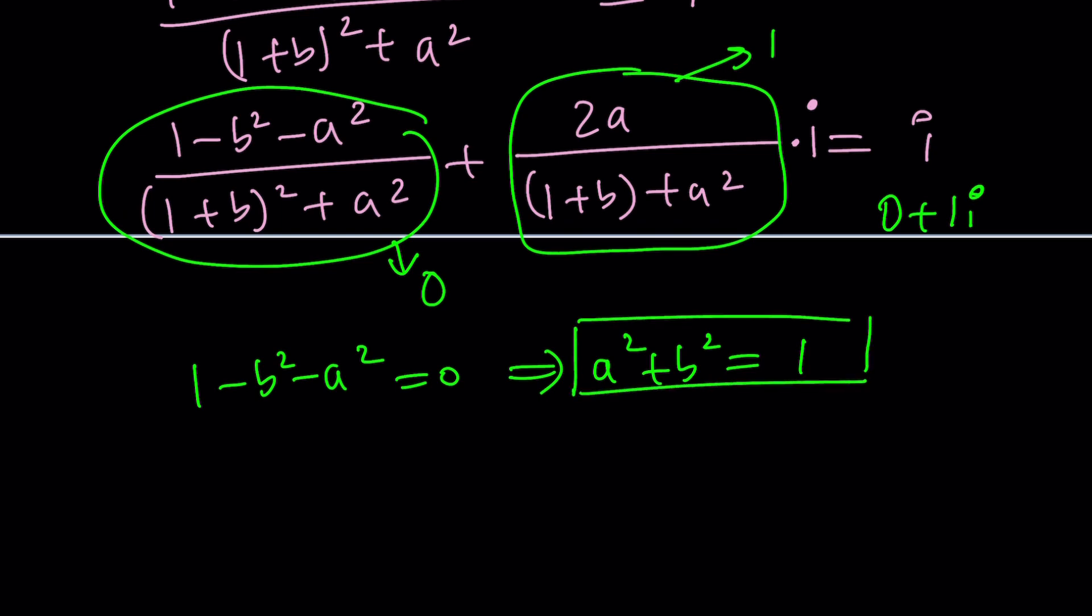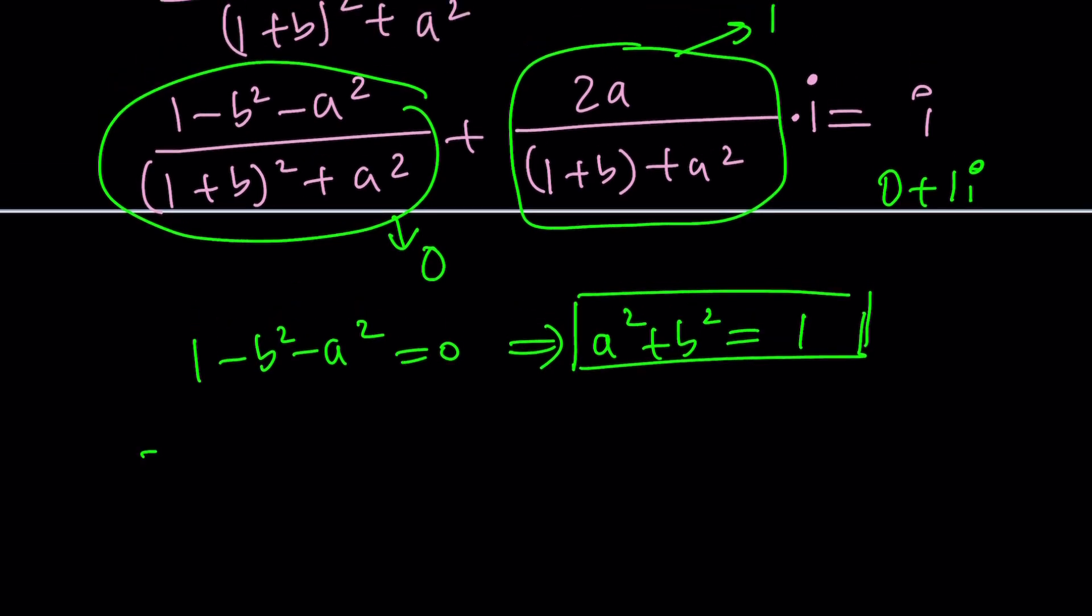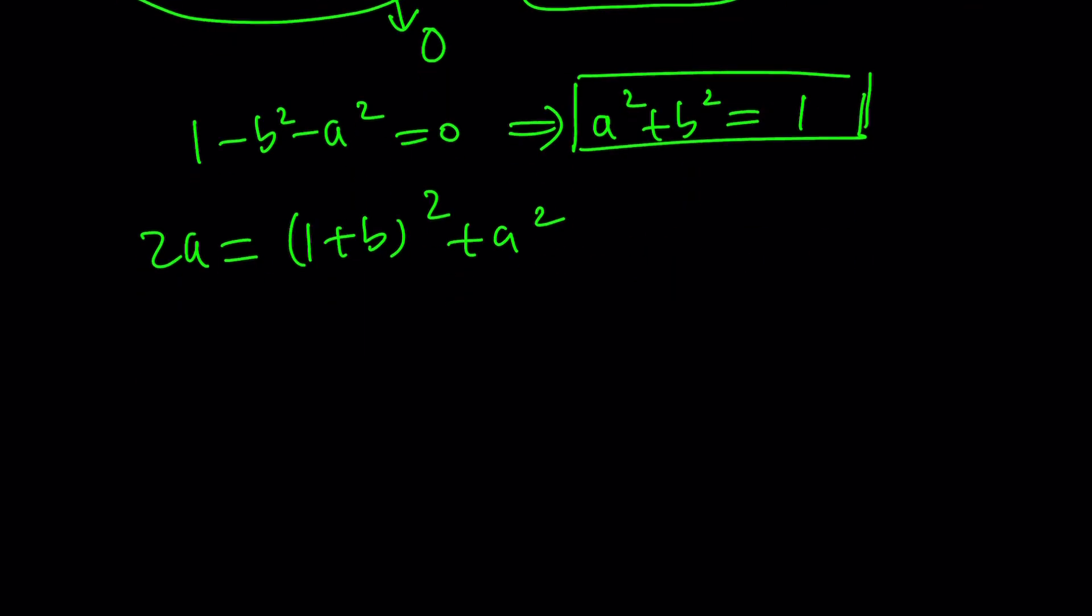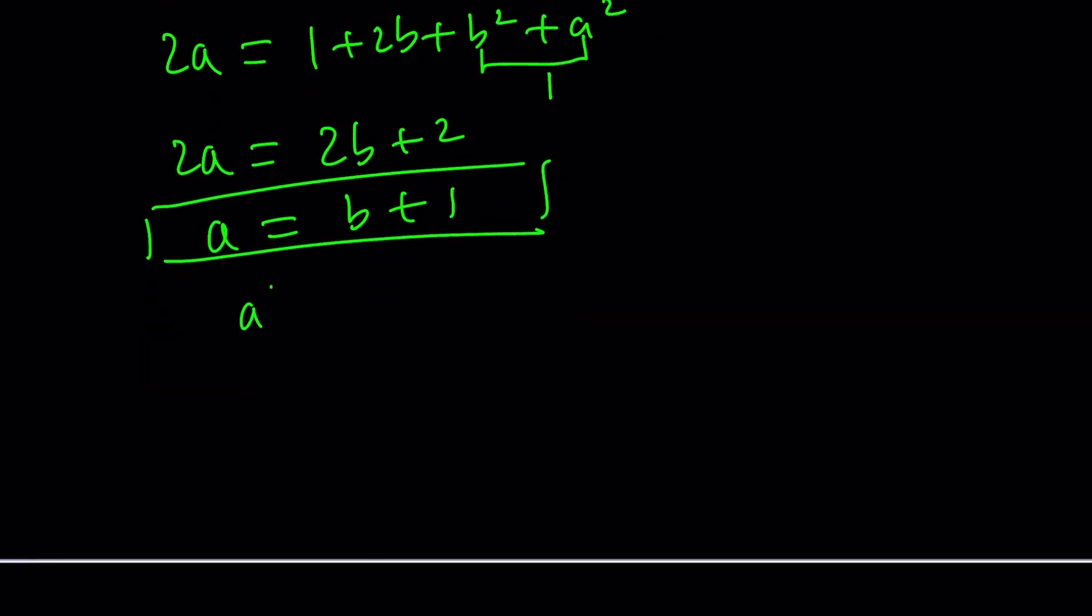We have a complex number whose modulus is 1. The second equation gives us 2a equals 1 plus b squared plus a squared. 2a equals 1 plus 2b plus b squared plus a squared. Now I can replace a squared plus b squared with 1. That gives me 2a equals 2b plus 2 or a equals b plus 1. I'm going to use this along with the other equation and solve it as a system.